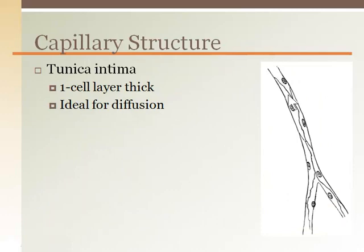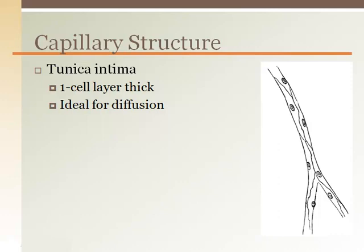Capillaries only have the endothelium, or tunica intima. This means that at no point is the blood without contact with the endothelium. Arteries and arterioles all have all three layers, but as soon as the blood enters a capillary bed where diffusion can take place, there is only an endothelium — a single cell layer wrapping around or defining that vessel. This allows for diffusion to easily take place.